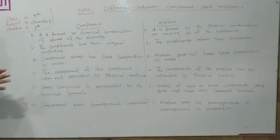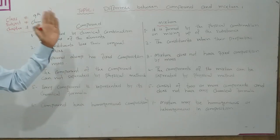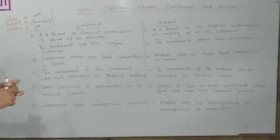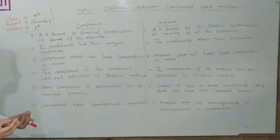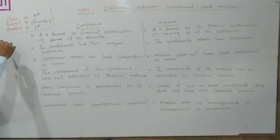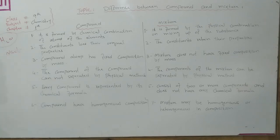In previous lectures I mentioned the compound and mixture. What is the mixture or the compound? So, compound and mixture. First, compound is formed by the chemical combination of atoms of the elements. For example, H2O is formed by the hydrogen bond, or NaCl is formed by the ionic bond.